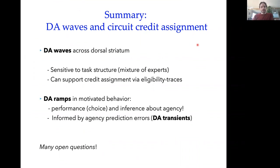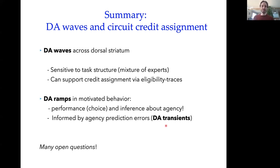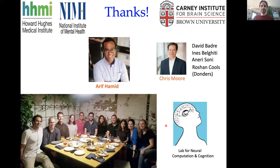To summarize, we observe a novel phenomenon of dopamine waves across the striatum that are sensitive to task structure and indicative of a mixture-of-experts framework. We think there's good plausibility that these waves support credit assignment via eligibility trace-like mechanisms, and they interact with a model of dopamine ramping as animals pursue rewards — where those ramps reflect accumulated evidence about task type, informed by transient prediction error signals at the sub-expert level. There are many open mechanistic questions. Thanks to Arif Hamid who did all of this work, collaborator Chris Moore, and my lab.